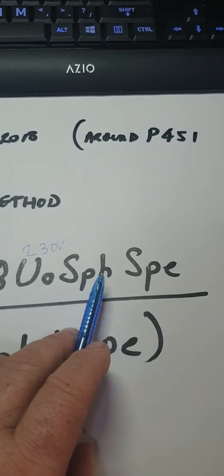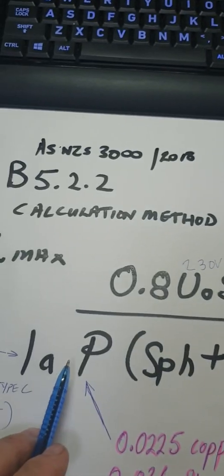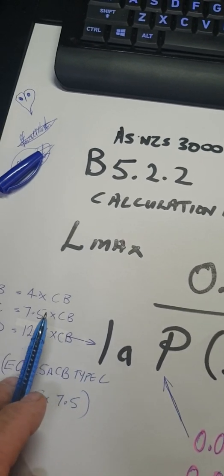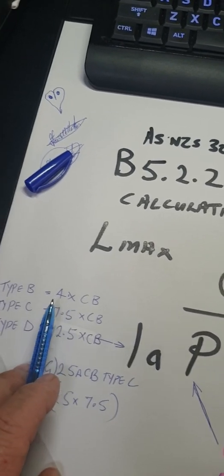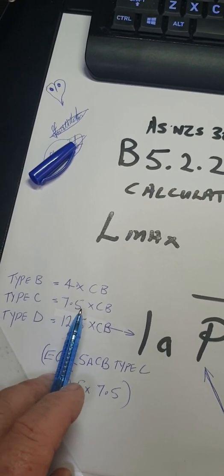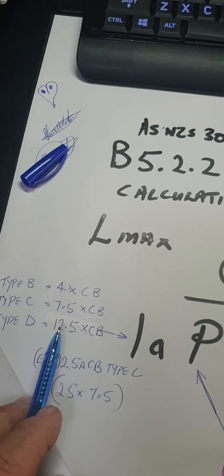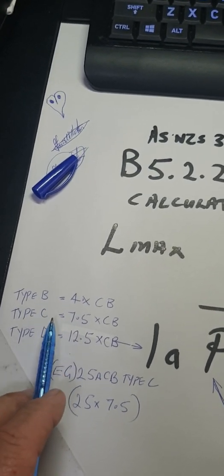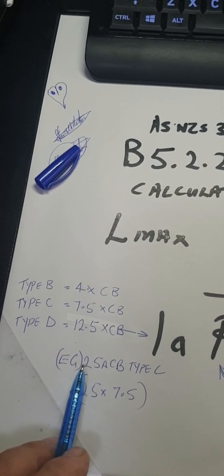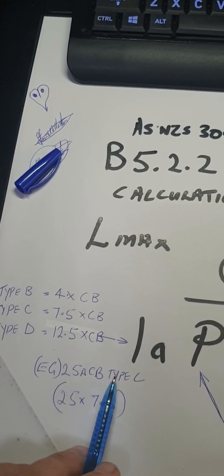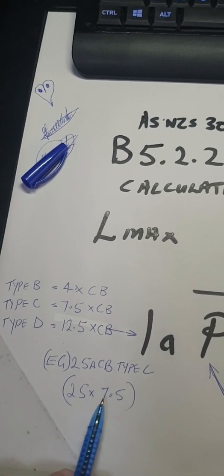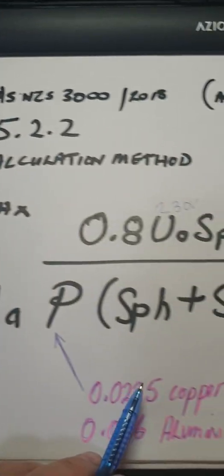SPH is the largest active, SPE is the largest earth or phase earth and phase active. Then we have IA. If you look over the previous page, you'll see four times for a type B is four times the circuit breaker, 7.5 times the circuit breaker for type C, and 12.5 for a type D. These are the three types of common circuit breakers we see inside a house.